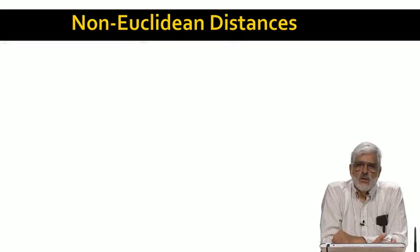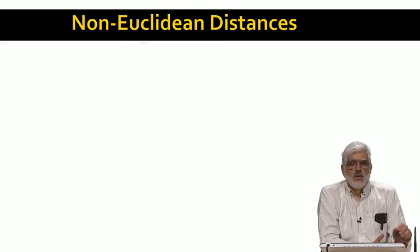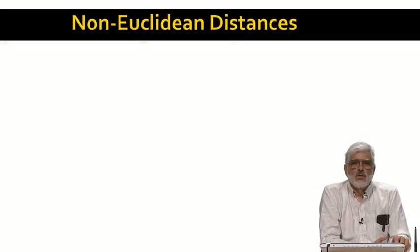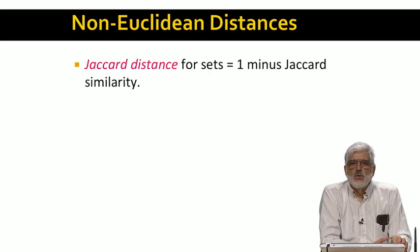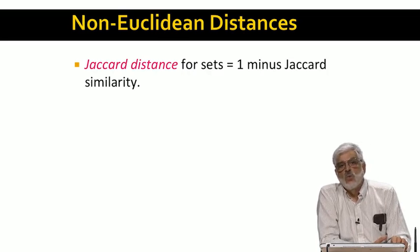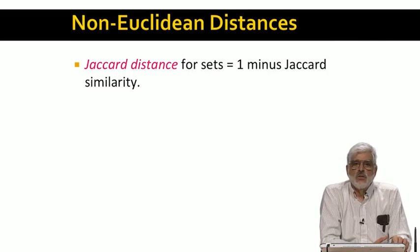Now let's introduce the non-Euclidean distances. First, the Jaccard distance is just 1 minus the Jaccard similarity. We use 1 minus so that identical sets have distance 0, and sets with no intersection have distance 1, which is the greatest possible distance.